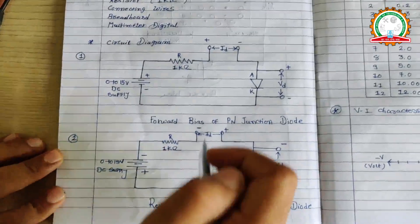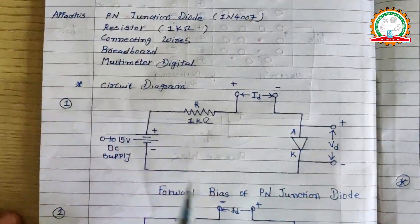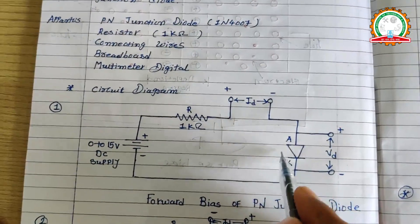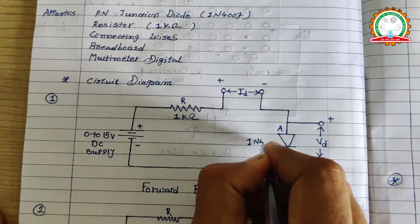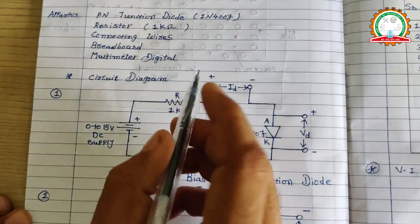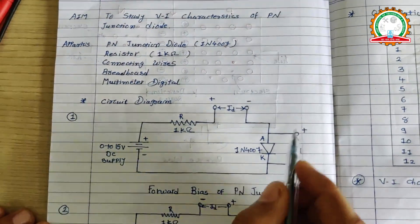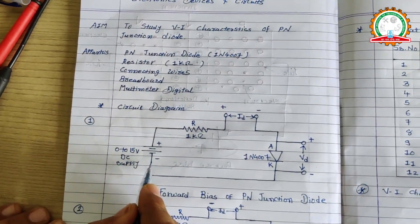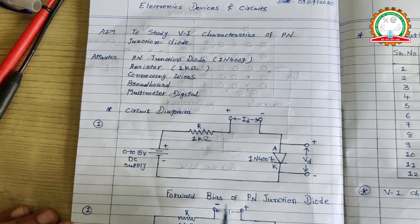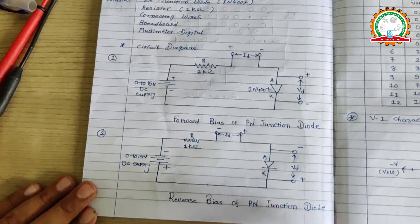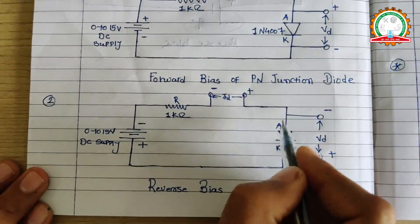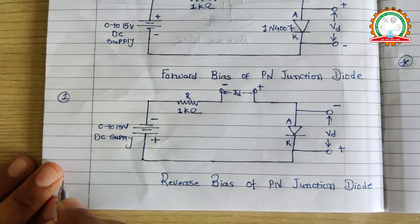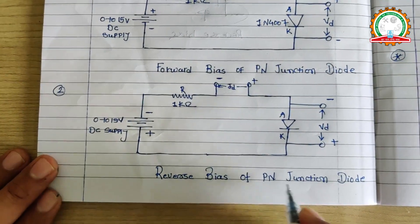Now see the circuit of forward bias condition. Here we use a 0 to 15 volt DC supply, one resistor of 1 kilo ohm, and one diode 1N4007. The anode is connected to the positive terminal of the battery and cathode is connected to the negative terminal — this is the forward bias condition. In reverse bias, the anode is connected to the negative terminal and cathode to the positive terminal. Either we change the polarity of the supply or we change the direction of the diode to switch between forward and reverse bias.